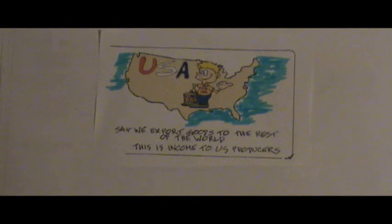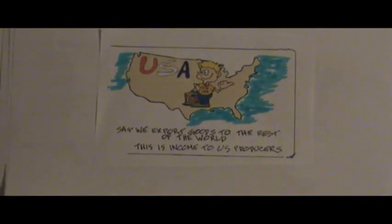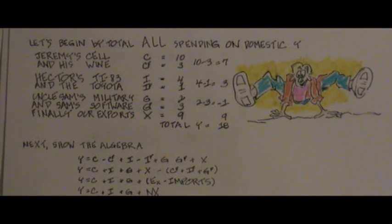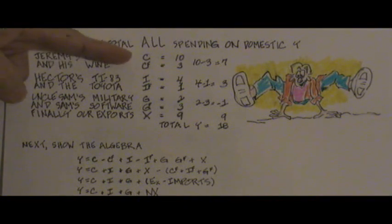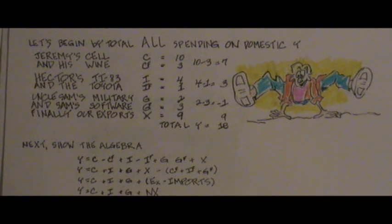Many of our domestically produced goods are sold abroad — we would call that exports. Now let's do a little bit of math. Jeremy's cell phone and Jeremy's wine are denoted by C for consumption and CF for foreign consumption. Hector's Texas Instruments and the Toyota are denoted as I and IF. Uncle Sam's military spending, software, and our exports are also given.